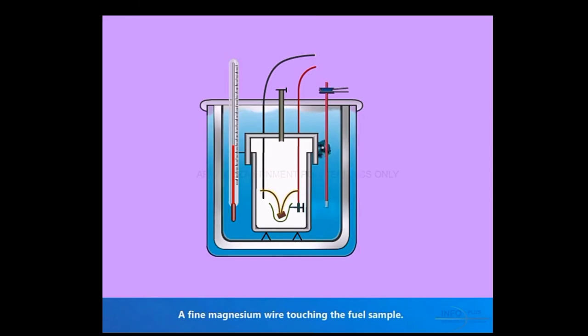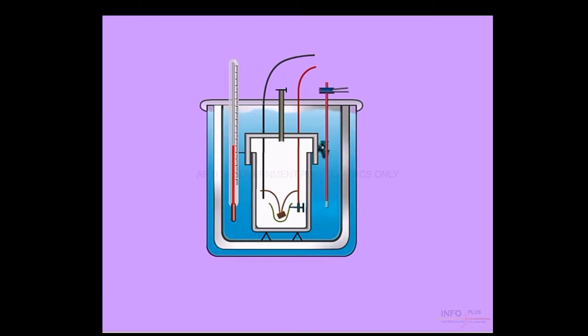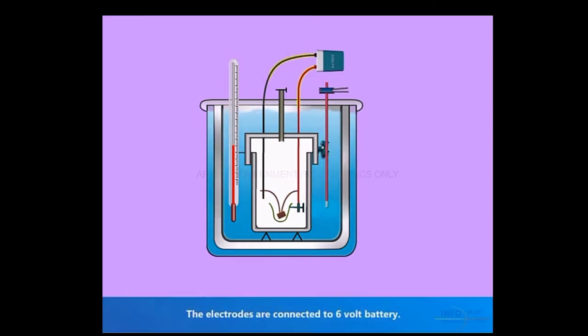A fine magnesium wire touching the fuel sample. Stainless steel electrode. The electrodes are connected to a 6 Volt battery.